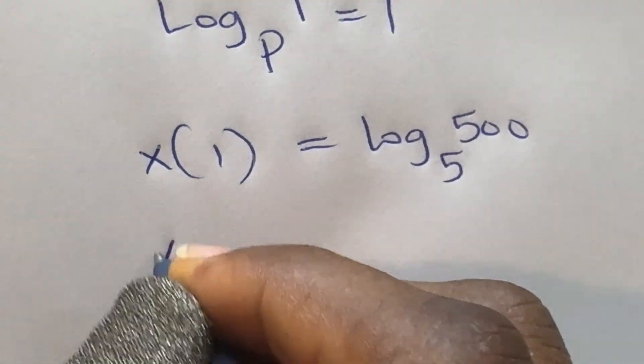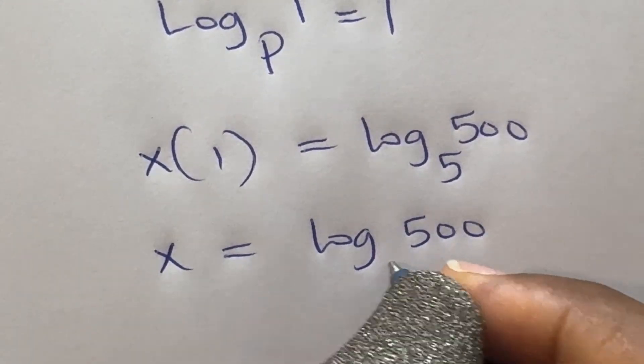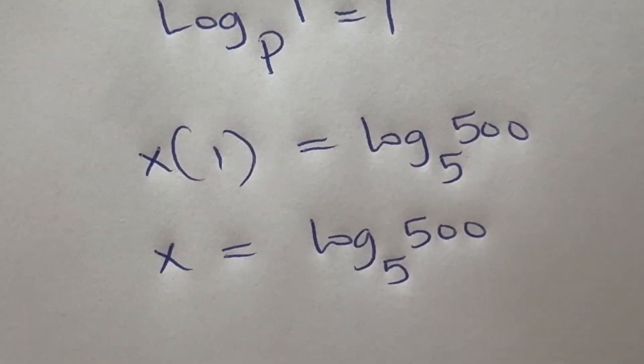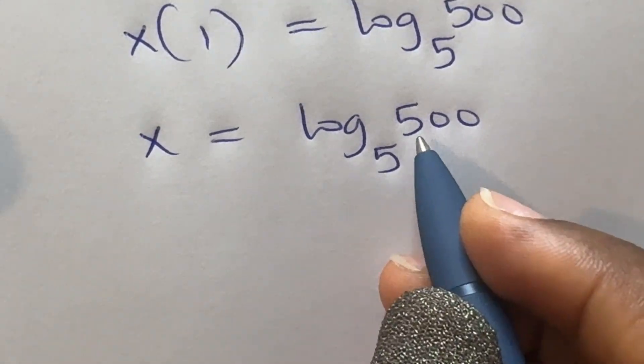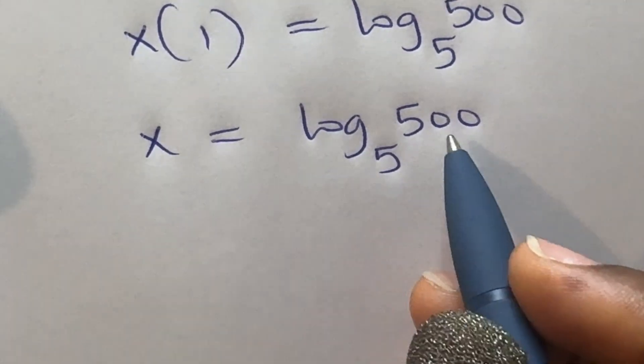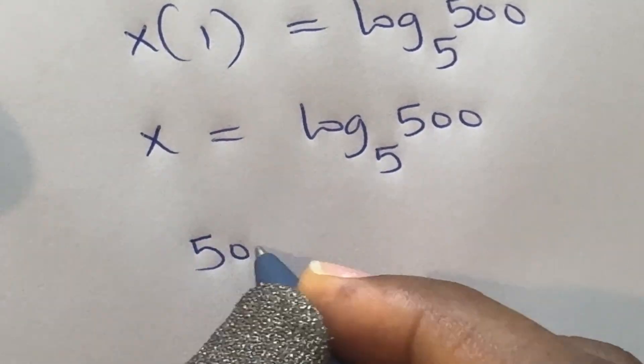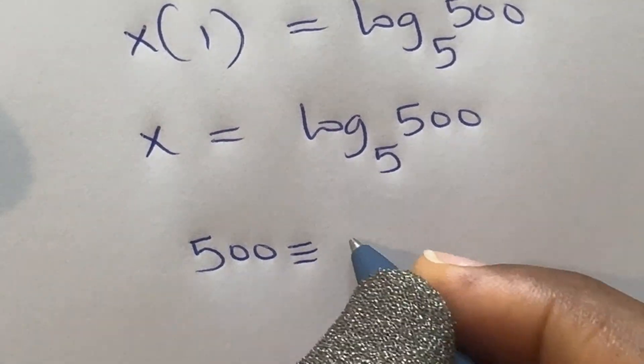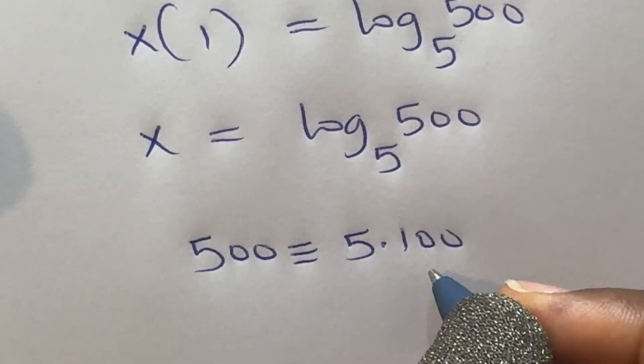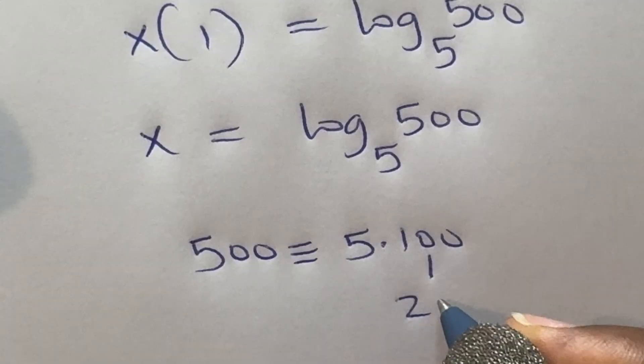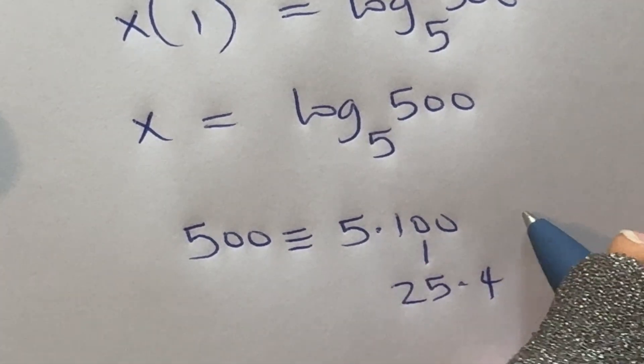x is equal to log 500 base 5. I can split 500 into 5 times 100. 100 itself is 25 times 4. This is what I mean: 500 is equivalent to 5 times 100, and 100 itself is 25 times 4.